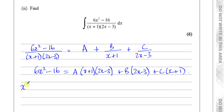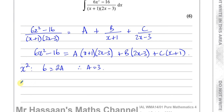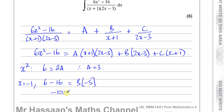For A, it's easiest to compare the coefficients of x². On the left side we've got 6; on the right side, A times 2x² will be the only x² term, giving 2A. So A equals 3. To find B, the easiest way is to substitute x = −1, which causes the other terms to cancel. Putting −1 in: 6(−1)² − 16 = −10, and we're left with B times (2(−1) − 3) = B times (−5). So −10 = −5B, therefore B equals 2.